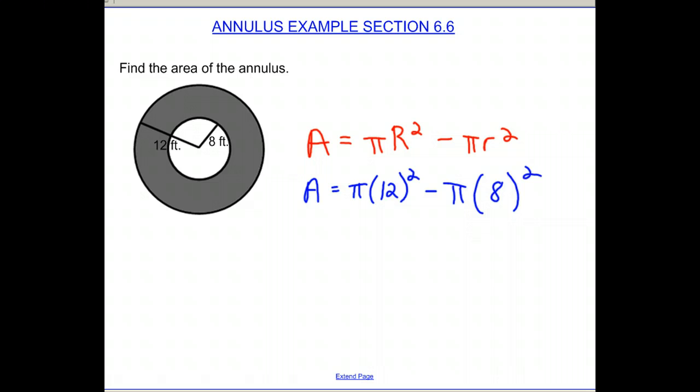Now if I do the math here, again I want to leave it in terms of pi, so don't multiply pi through. But 12 squared gives me 144, so I have 144 pi. And 8 squared is 64, so I have 64 pi over here.